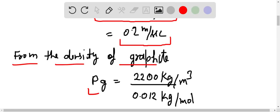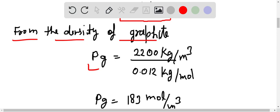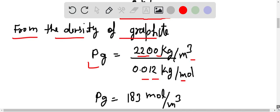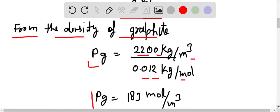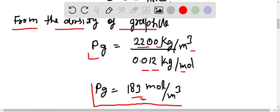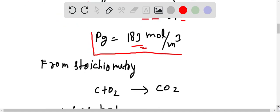That is ρg here, 2200 kilogram per meter cube divided by 0.012 kilogram per mole, and here we get ρg, that is density of graphite is 183 mol per meter cube. Now from stoichiometry...